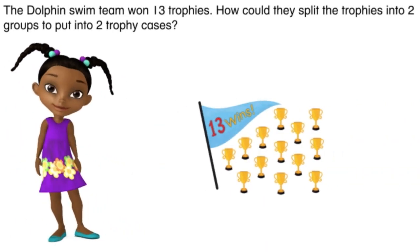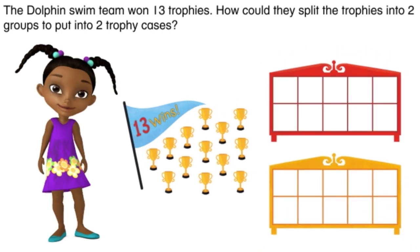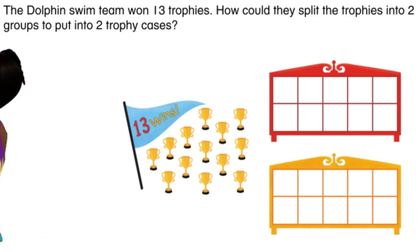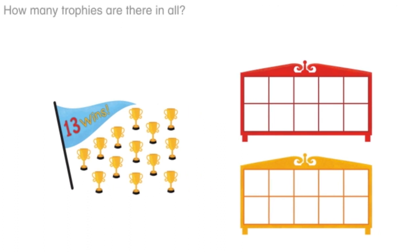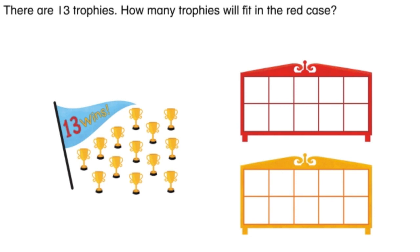The dolphin swim team won 13 trophies. How could they split the trophies into two groups to put into two trophy cases? If we have two trophy cases, we should probably fill up the first trophy case and then put the rest in the second. How many trophies are there in all? Look, our flag tells us what number. You're right — there are 13 in all.